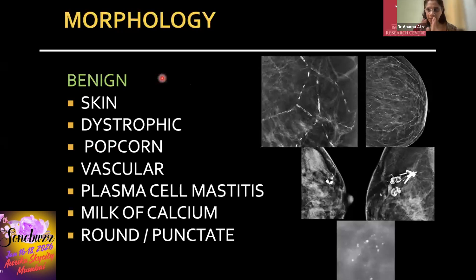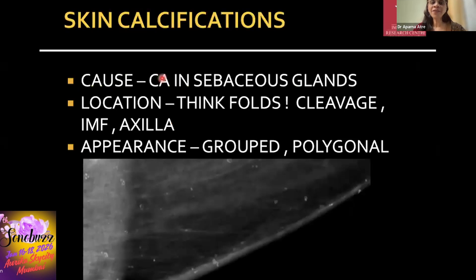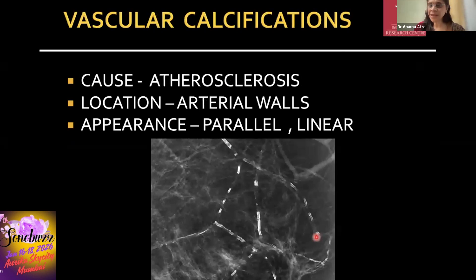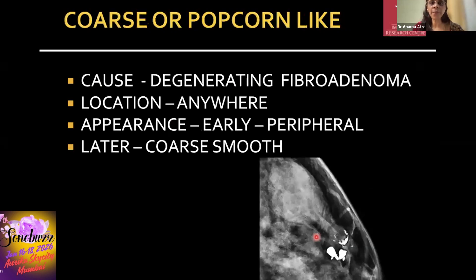Benign calcifications are those you look at and leave aside without any intervention. Skin calcifications are polygonal with a lucent center, located along the cleavage, inframammary folds, or axilla; tangential views or DBT slices help confirm them. Vascular calcifications can be a problem only if along one wall of a vessel, but tracing them along the vessel clarifies the finding. Coarse or popcorn-like calcifications, where you see an associated density that coalesces into one large chunk, are pathognomonic of a degenerating fibroadenoma.